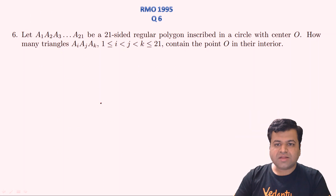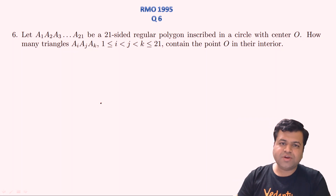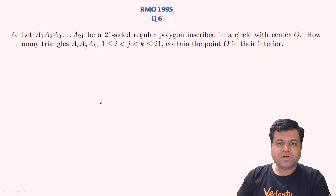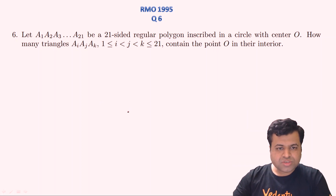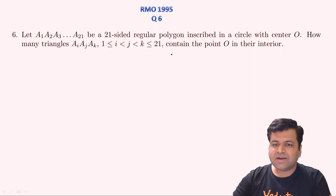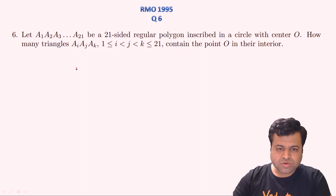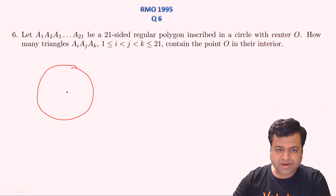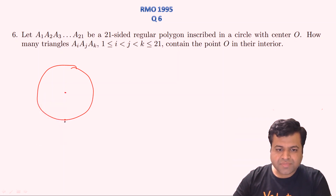Let's start our session. This is question number 6 of year 1995, a question from permutation and combination. If you have not solved it yet, kindly pause the video and give a genuine 20 to 25 minutes to this question. The question states that A1 A2 A3 up to A21 is a 21-sided regular polygon inscribed in a circle with center O.